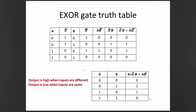For the XOR truth table, inputs A and B give combinations 00, 01, 10, 11. We find A-bar and B-bar, then compute A·B-bar and A-bar·B, and add them. The XOR output is: 0, 1, 1, 0. From the truth table: the output is low when the inputs are the same (00 or 11), and the output is high when the inputs are different (01 or 10).